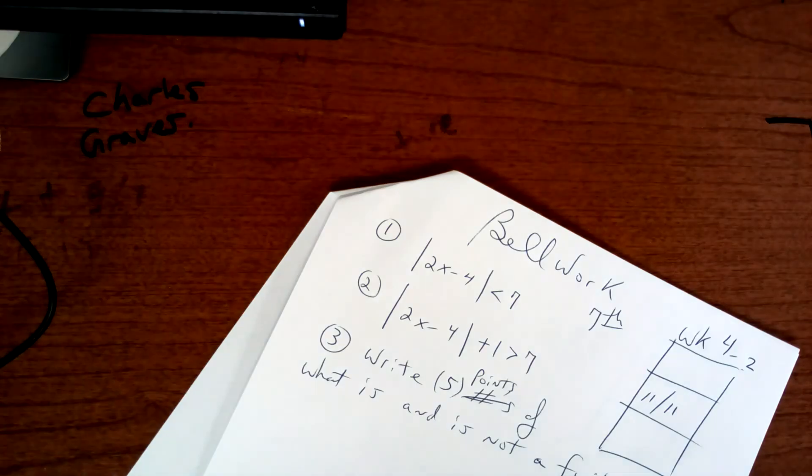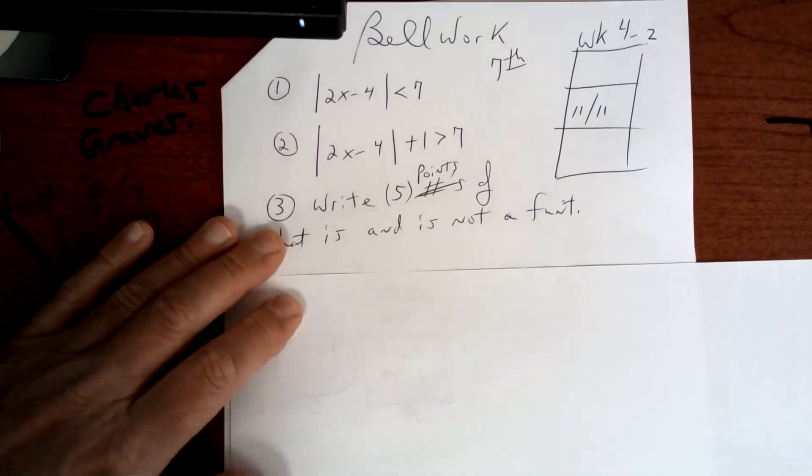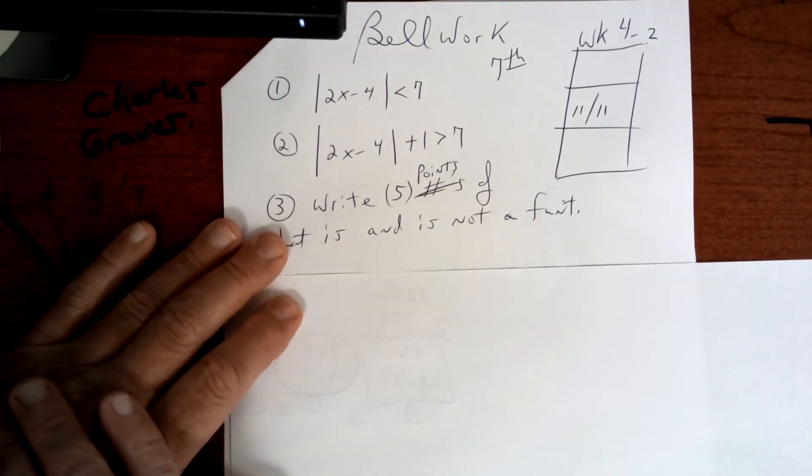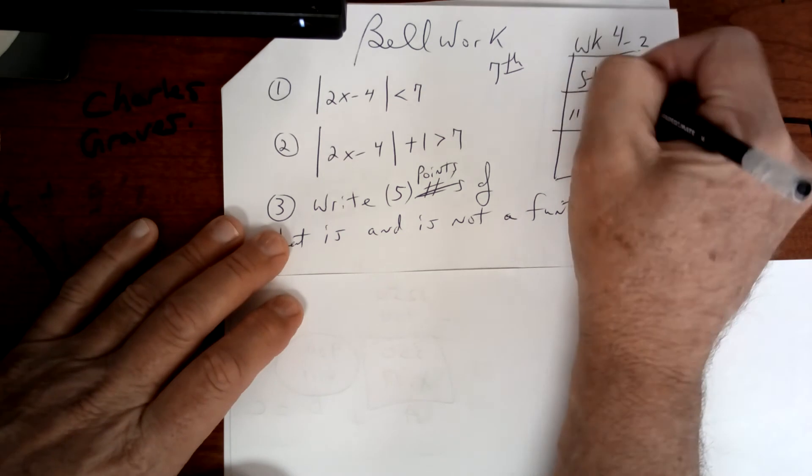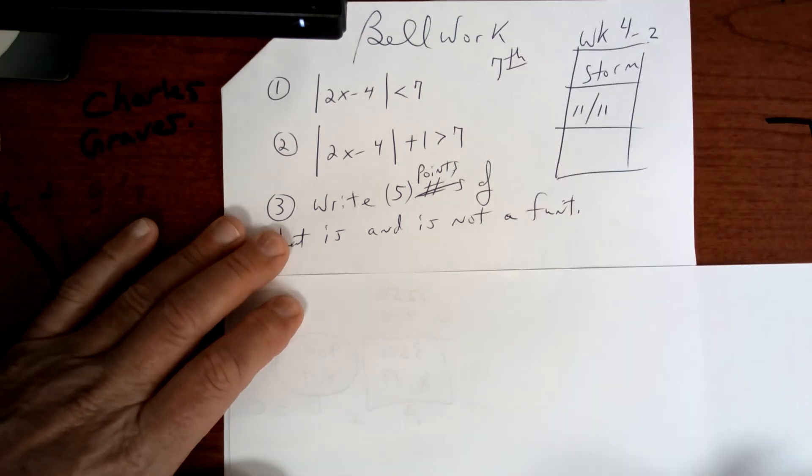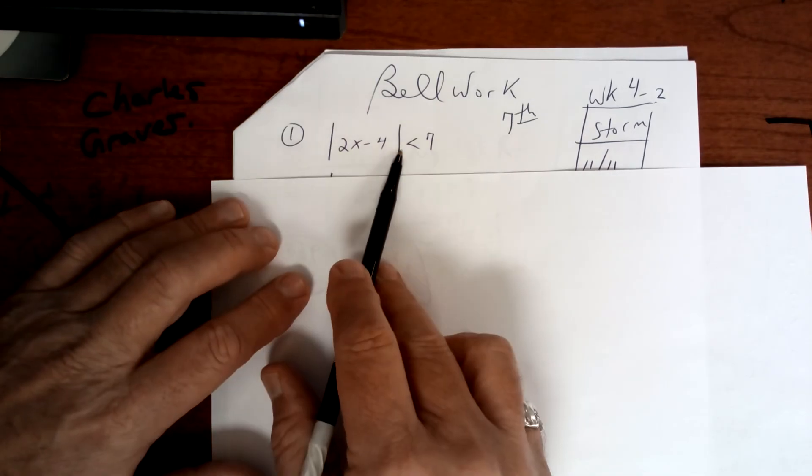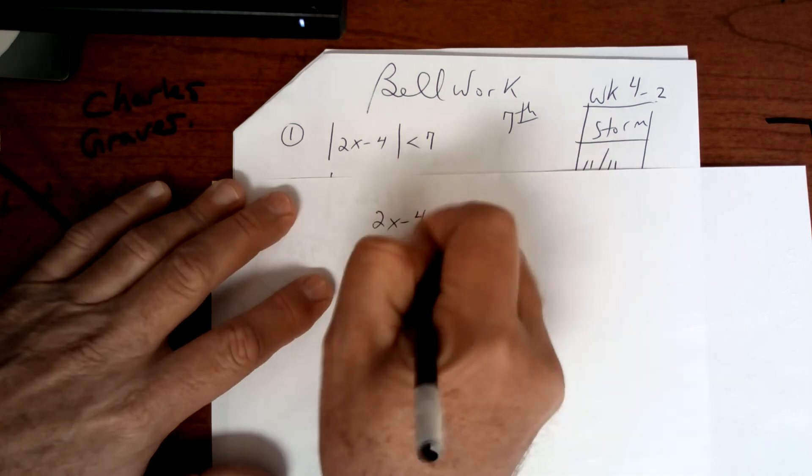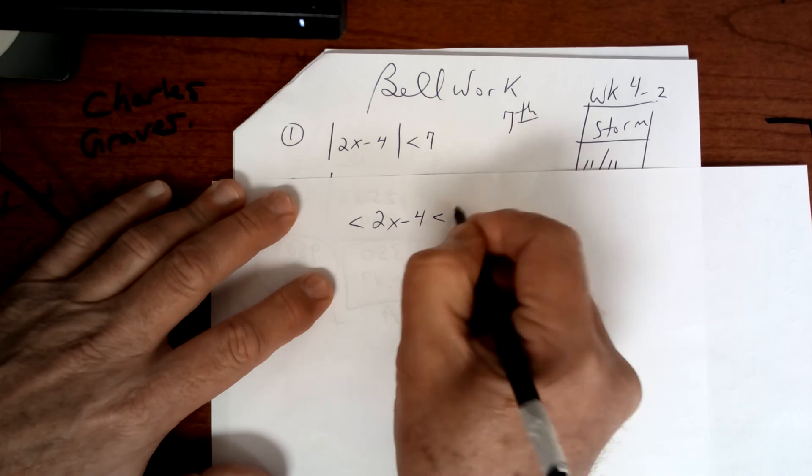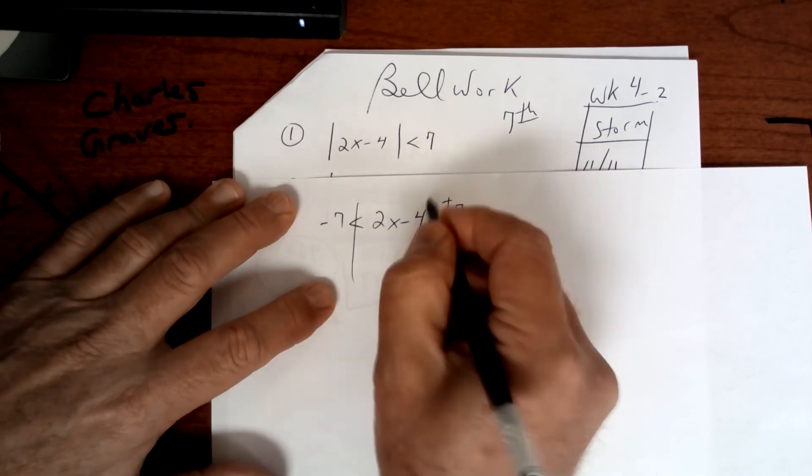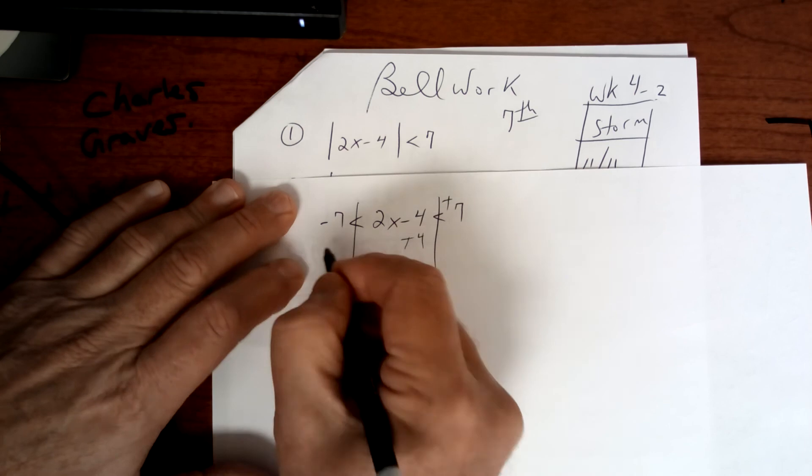We're going to turn our attention now to seventh period. This is a review here. Yesterday was a storm day, so make sure you put storm day. You will have to turn your homework in. Next weekend you will have a test. This right here is pointing towards the absolute value. When it points to it, it's called the squeeze. So you're going to take 2x minus 4 and squeeze it in between the positive and the negative and then you've got to work that out. You're going to add 4 to all three pieces.